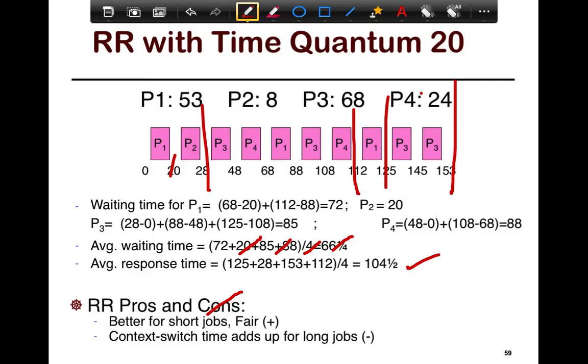The big negatives are obviously have context switch time, adds up for the long jobs. So, if you had FCFS system, when the long jobs come in, there's no cost associated with it, right? So, there's no context switch cost. They keep the CPU until they leave or finish up in the end.